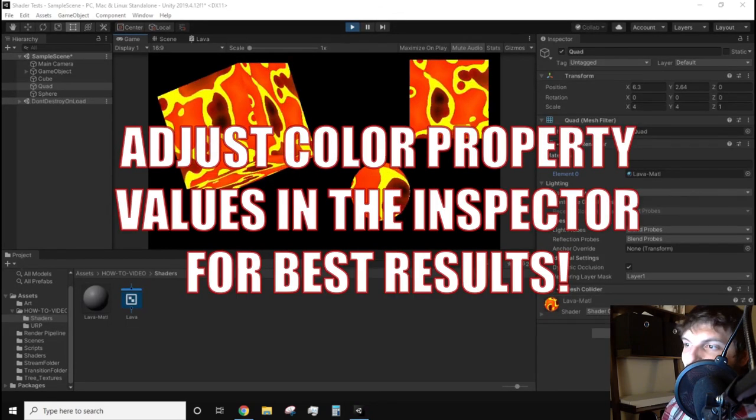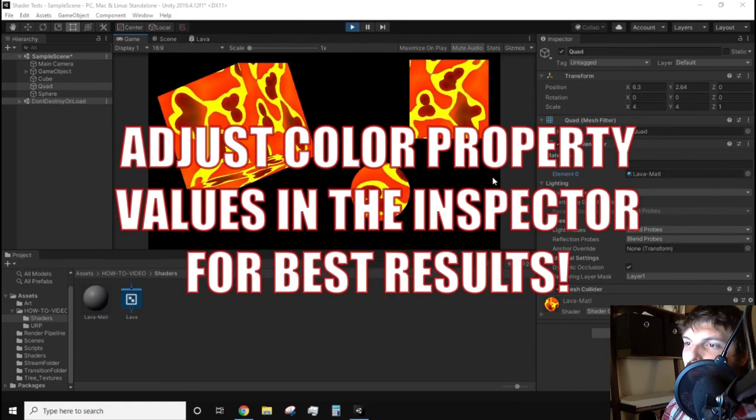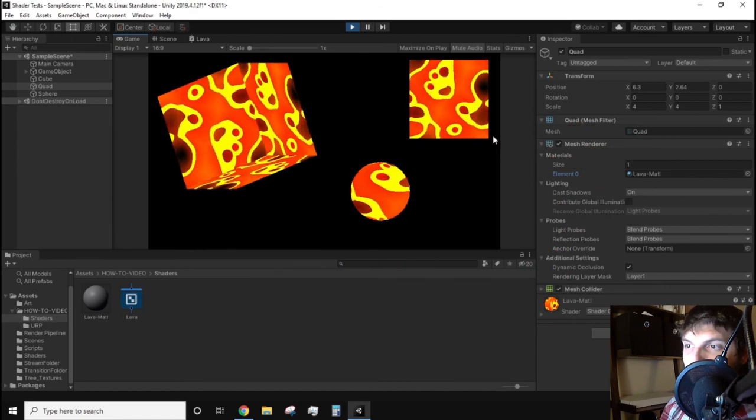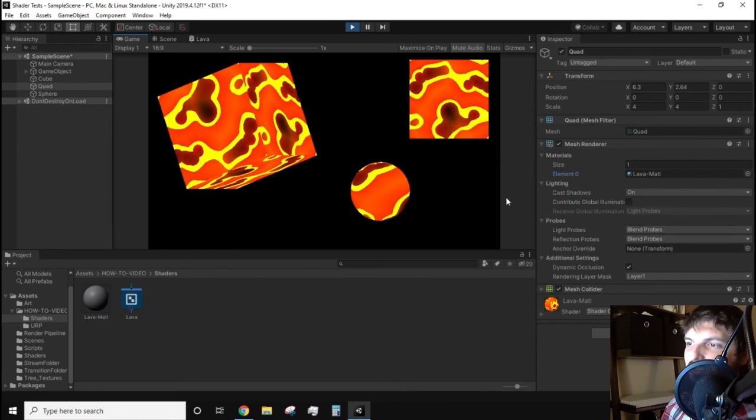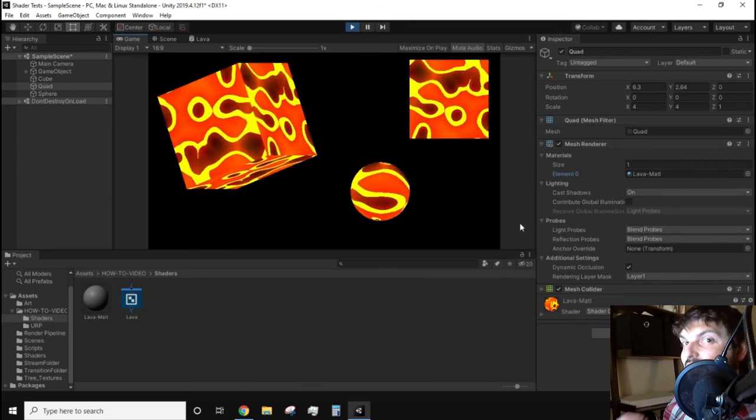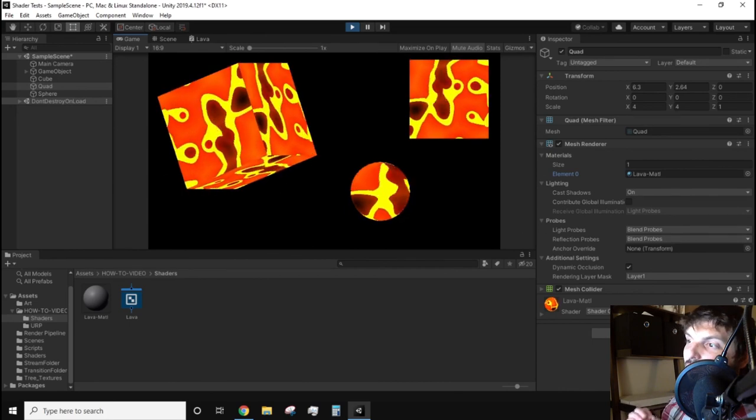The great thing about the properties we created in the blackboard that we also exposed make it very easy to adjust the shader at runtime, which gives us the ability to make it look exactly how we want. I want to thank you for watching and I hope you learned a lot from the video. If you did, please consider liking and also subscribing to the channel for more game development content such as this. But anyways, I hope you stay safe and take care.